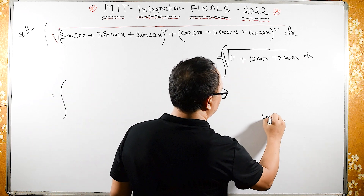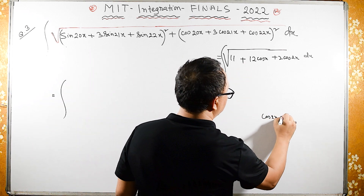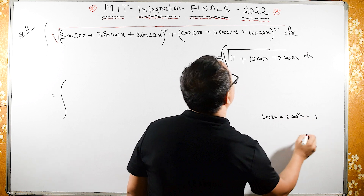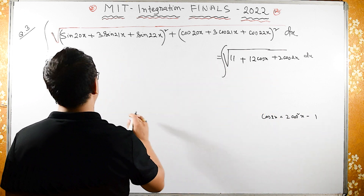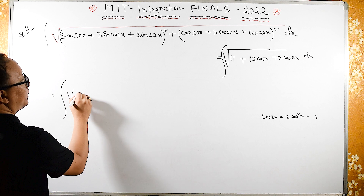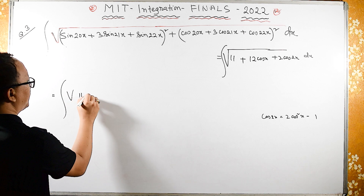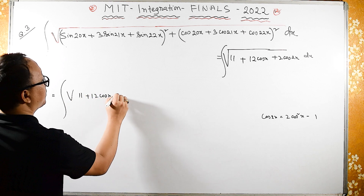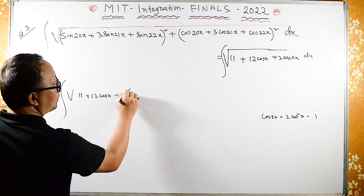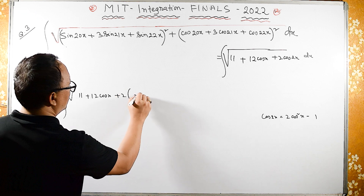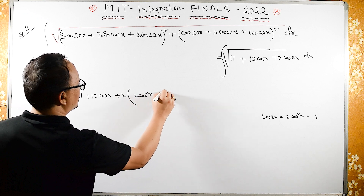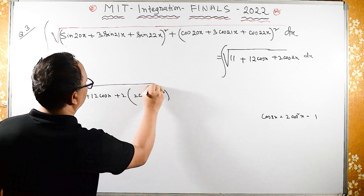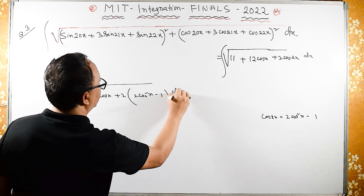We use the identity cos(2x) = 2cos²(x) - 1. So instead of cos(2x) we substitute, giving us the square root of 11 plus 12 cos(x) plus 2 times (2cos²(x) - 1), all under the integral dx.